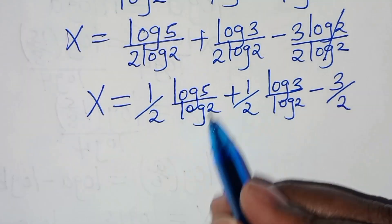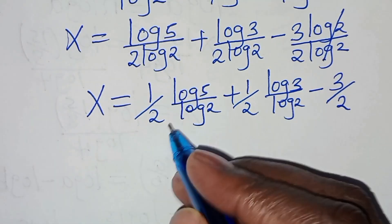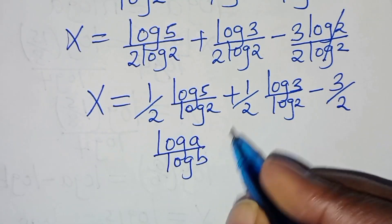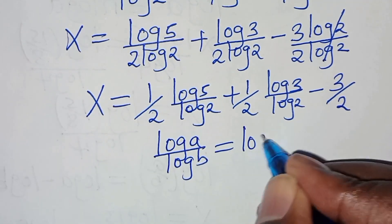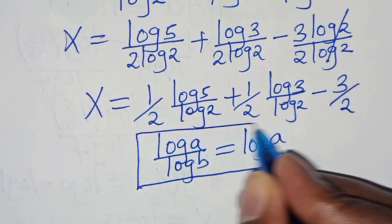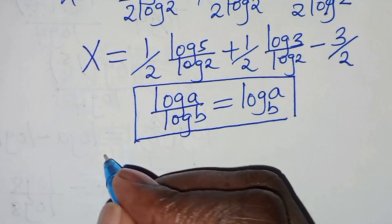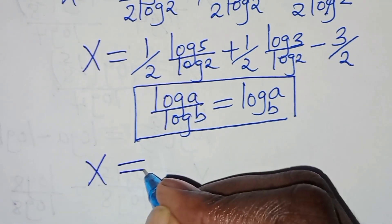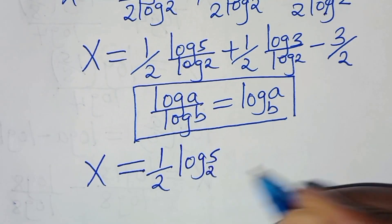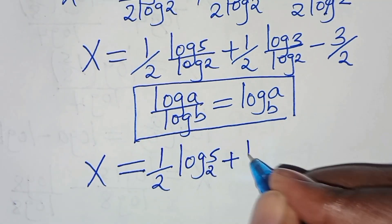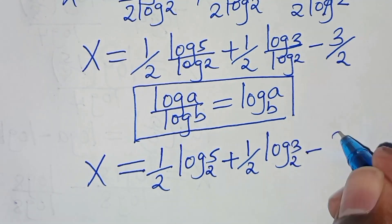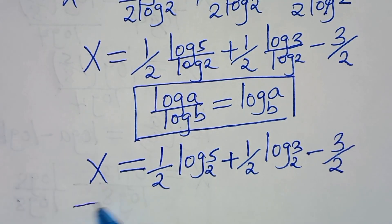We find that log 5 over log 2 and log 3 over log 2 are in the form of log A divided by log B, which we can express as log A to base B. Applying this logarithm property, x is equal to one-half log 5 to base 2, plus one-half log 3 to base 2, subtract 3 over 2. This is the value of x.